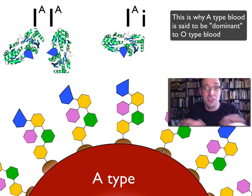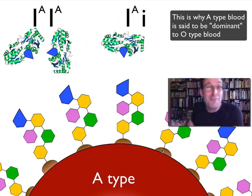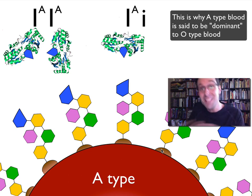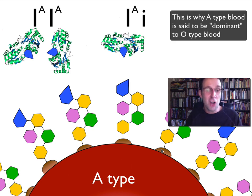And so when you look at the surface of a red blood cell of a person who has A-type blood, they will still have no H-antigens — they will only have A-antigens. So a person who is heterozygous, with Big I-A and little i as their genotype, their phenotype is still A-type blood for that reason.